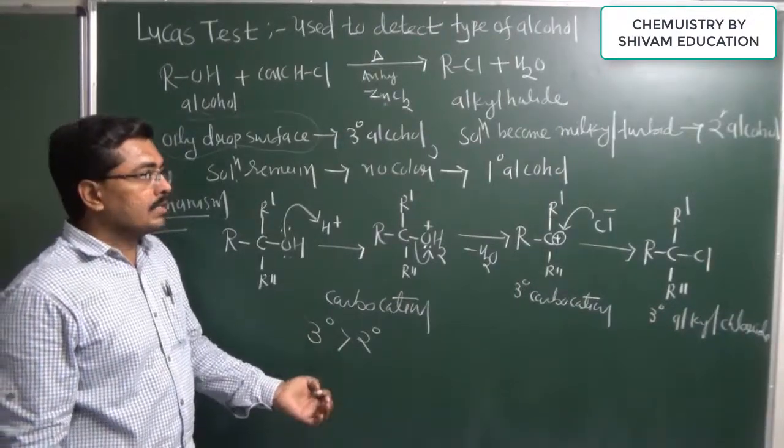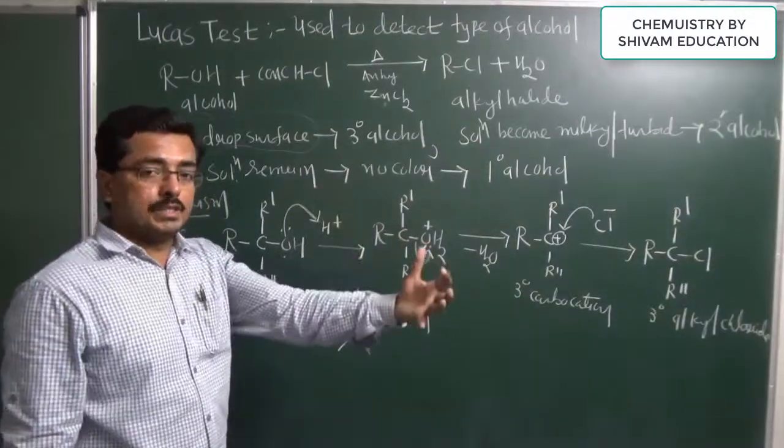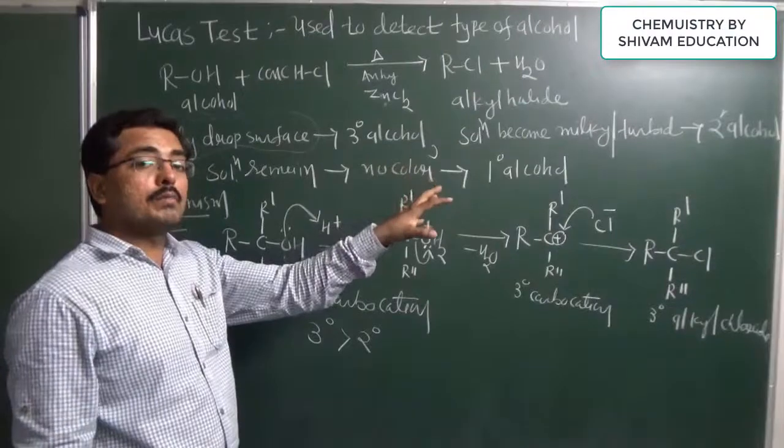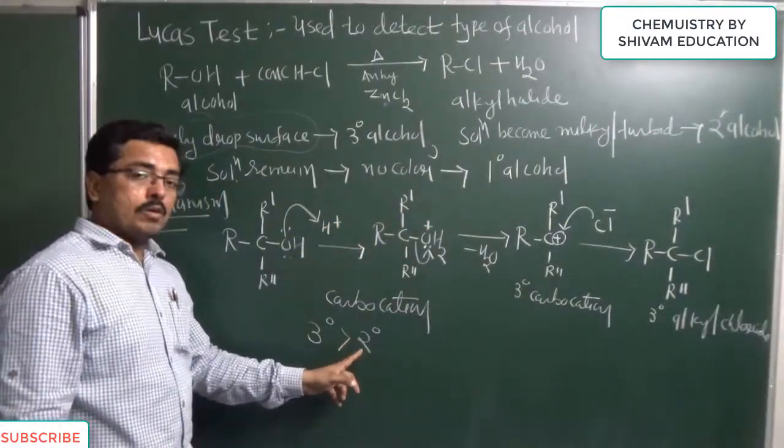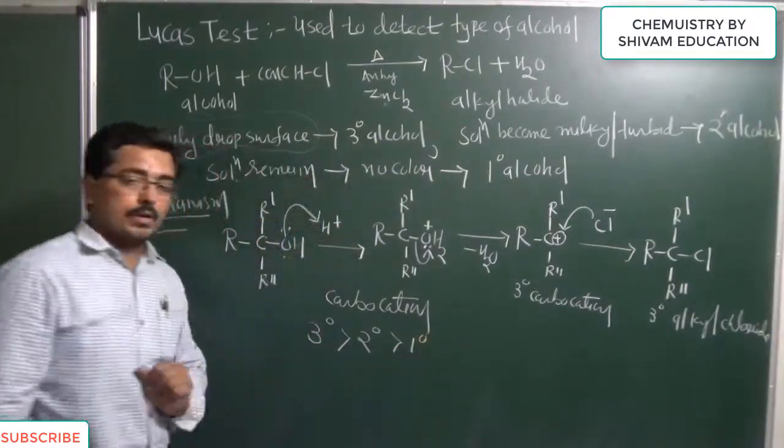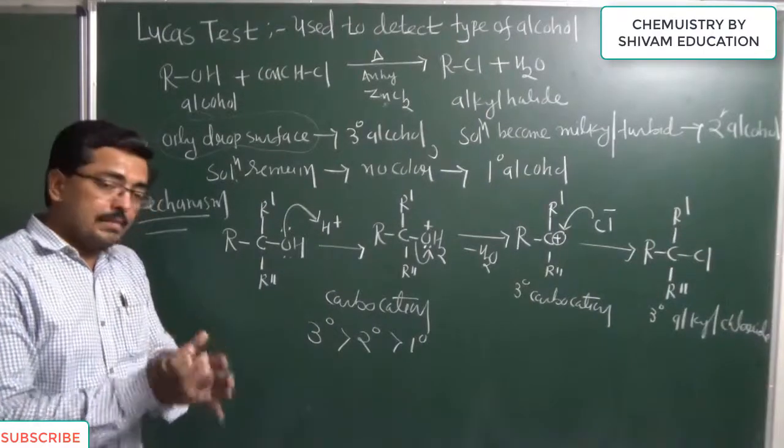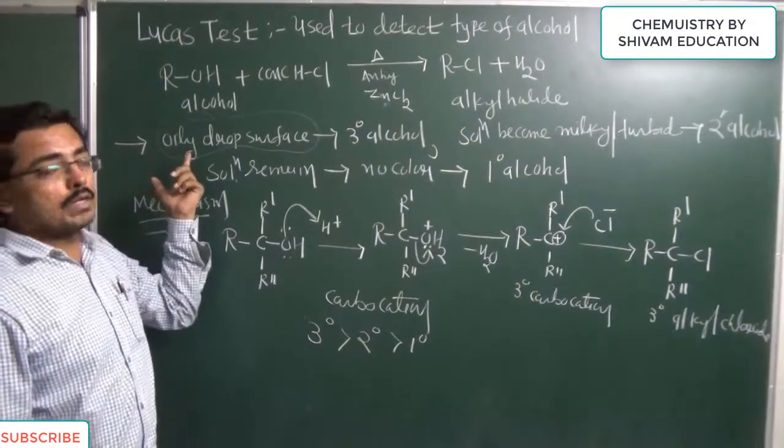Now in case of secondary carbocation, stability is less so it takes some time. Means after 5 minutes solution will give alkyl halide. So solution becomes turbid after 5 minutes, then type of alcohol or carbocation is secondary. And primary carbocation react slowly. So this reaction will be given immediately by tertiary carbocation.